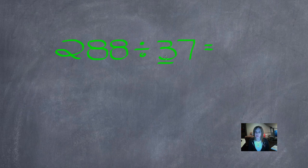So if I round this, it's going to be 40 because 37 is closer to 40 than to 30. Now, I'm going to look at the first two digits.